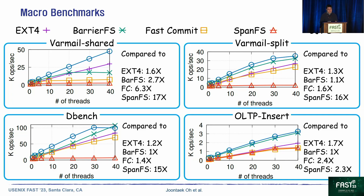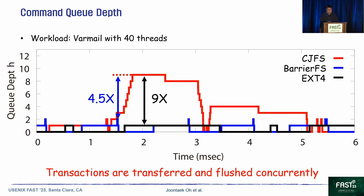Our purpose is concurrent transaction commit. Real-time command queue depth shows how many concurrent transactions are being committed at once. In EXT4, the maximum command queue depth is 1. In BarrierFS, the maximum is 2, thanks to the order-preserving block device. In CJFS, multiple transactions can be committed at once, so the maximum command queue depth reaches 9.